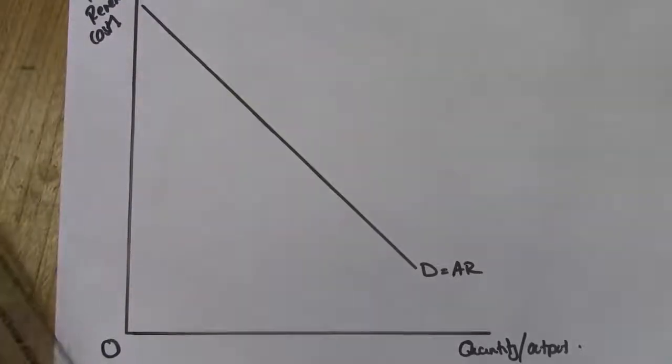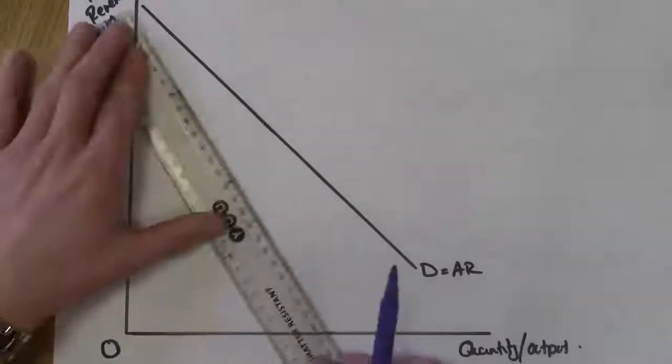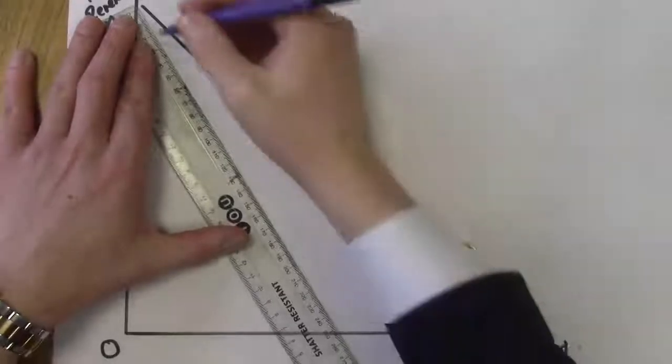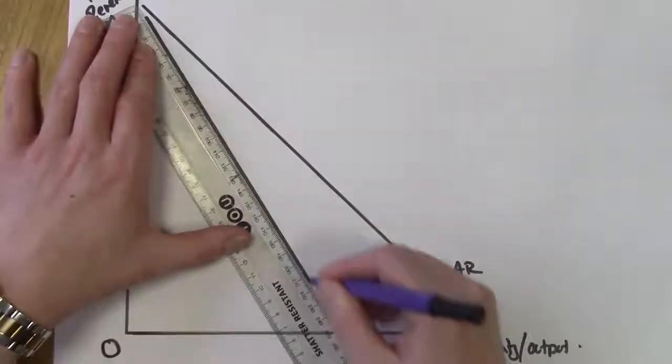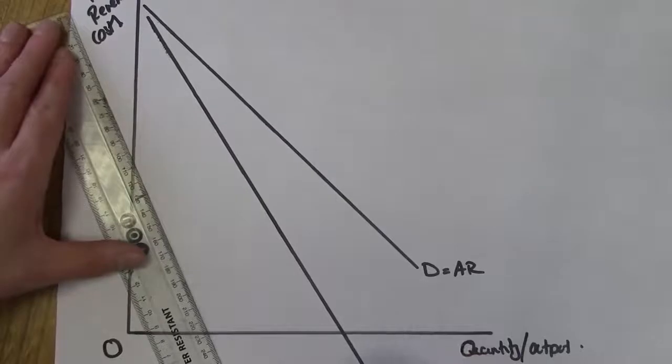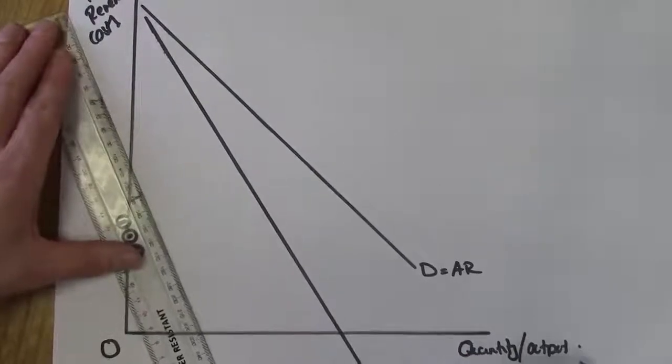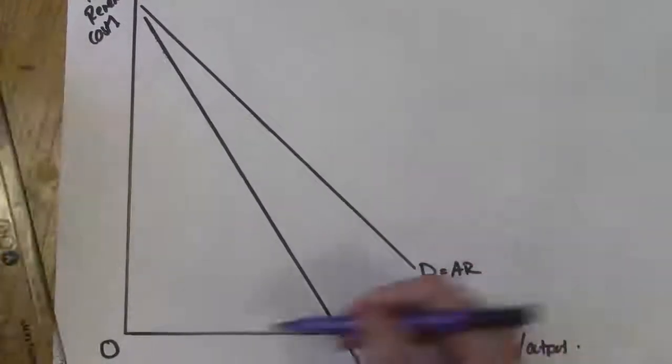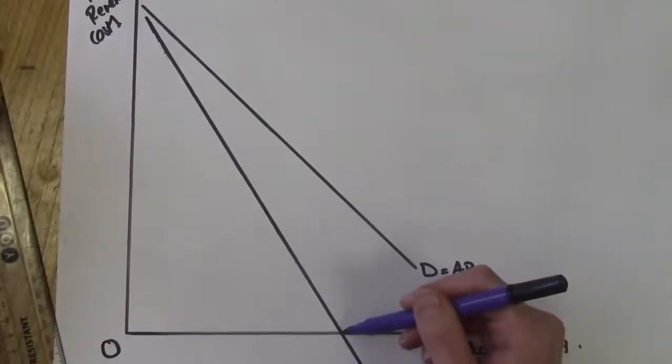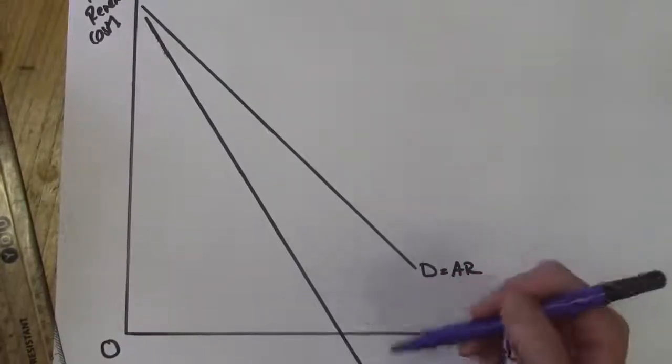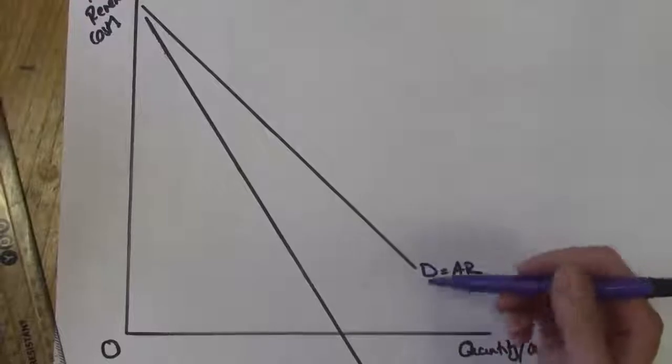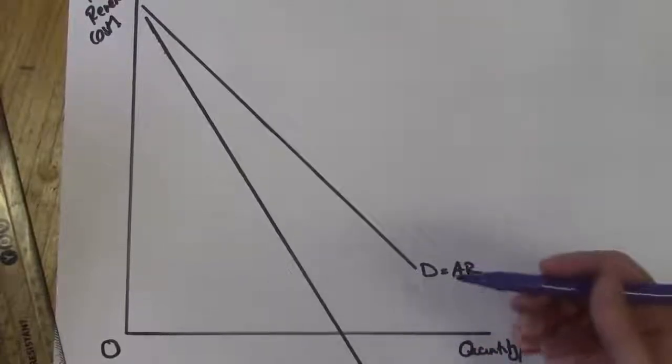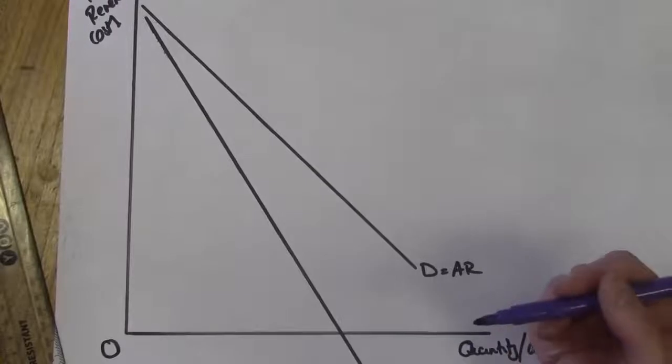Now one other thing we need to include onto this before we move on is our marginal revenue curve. And one thing you must always remember is that the marginal revenue curve falls at twice the rate of the AR curve and it cuts the x-axis. Now at this point where MR equals zero is our point of revenue maximization. So always quite a good thing maybe to bear in mind. You can also show that on your diagram.